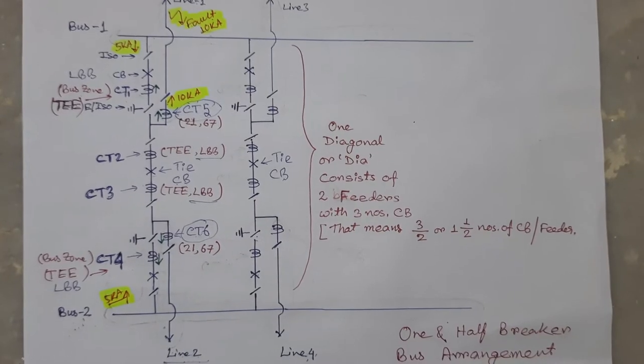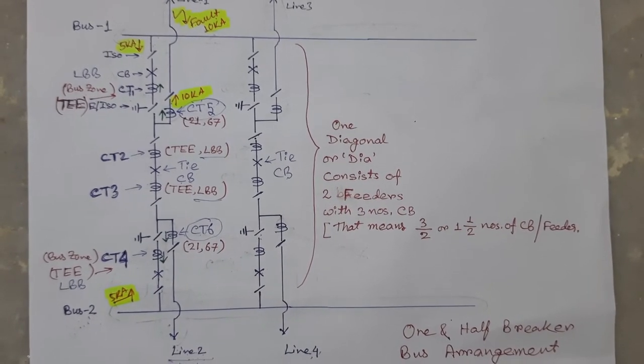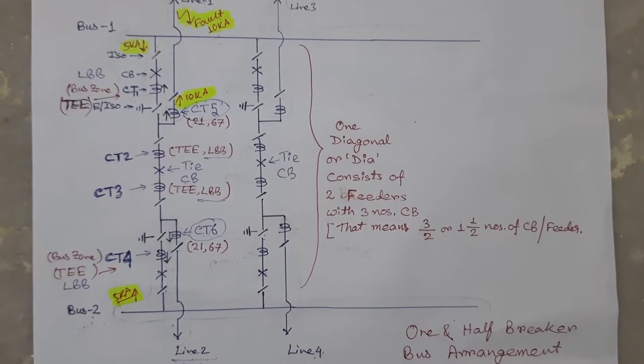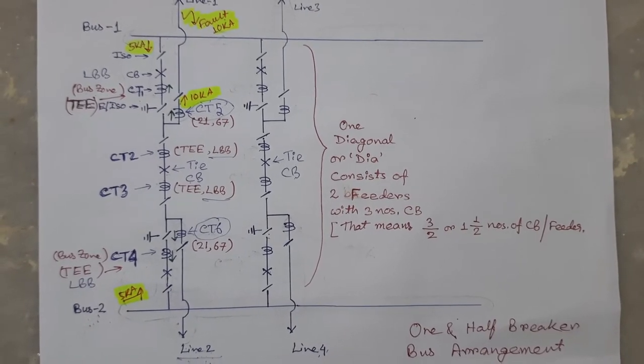LBB or local breaker backup protection is used for protection of power system when a circuit breaker is unable to clear a fault due to mechanical or electrical trouble occurs in that circuit breaker.